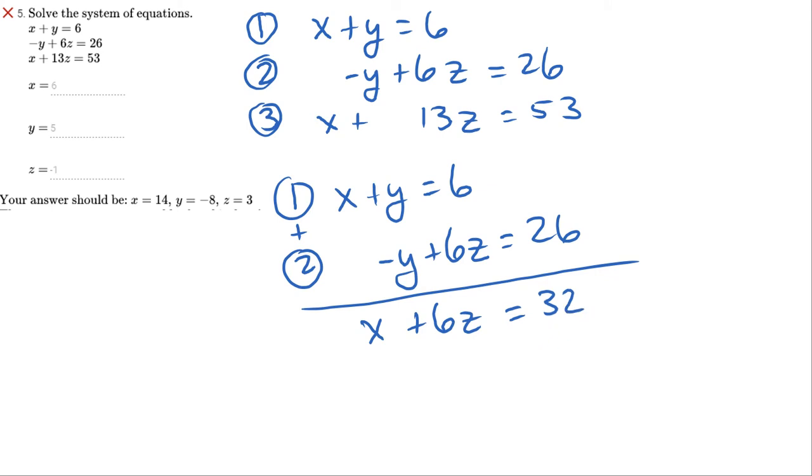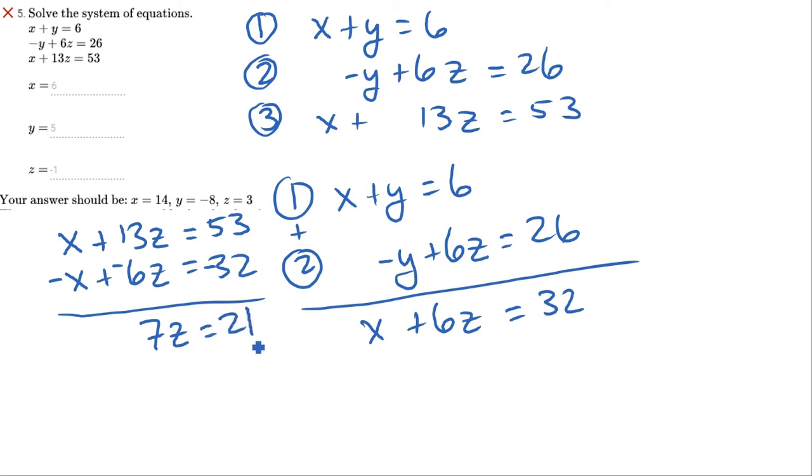Now at this point, you may be saying, well, how did that help us, right? I've still got two variables. But now, let's go back up here. I have my third equation, which is X plus 13Z equals 53. And I have a new equation I created by combining 1 and 2, which is X plus 6Z equals 32. Can you see where I'm going here? Can you see what I'm going to do? So let's multiply negative 1 through this bottom one, or basically we're subtracting it from the top one. X minus X goes away. I just got rid of a variable. 7Z equals 21. Divide that 7 over and Z equals 3.